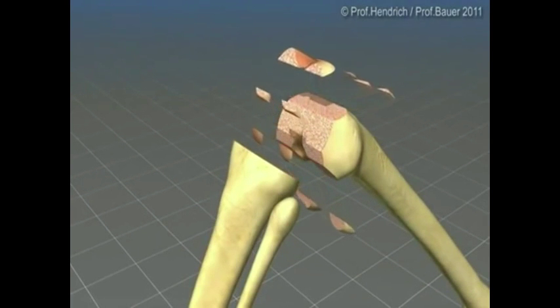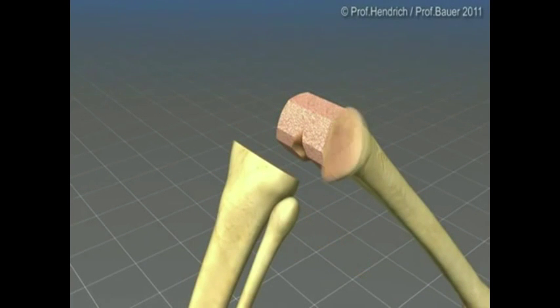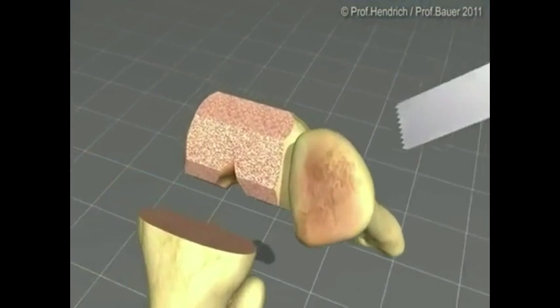After removal of these bone parts, the femoral side is ready to take the prosthetic device.